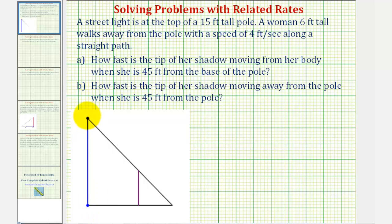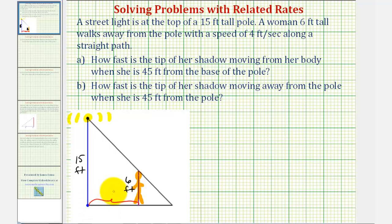Let's assume this is the light, which we know is 15 feet tall. Let's assume this is the woman, who we know is six feet tall. Let's let the length from the pole to the woman be x, and let the length of the shadow be equal to s. The length from the pole to the tip of the shadow would be x plus s, which we'll call y. So we'll say y equals x plus s.